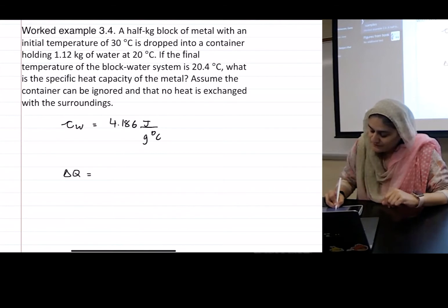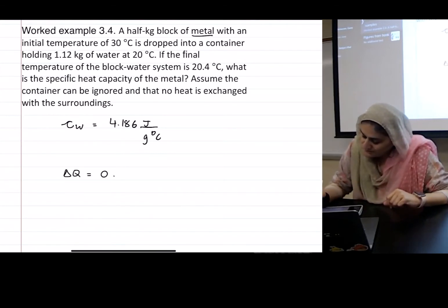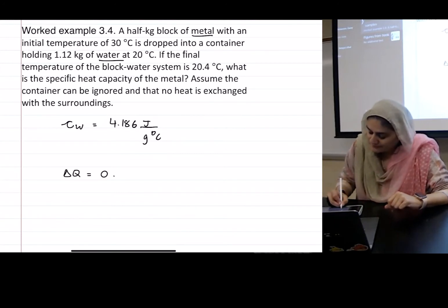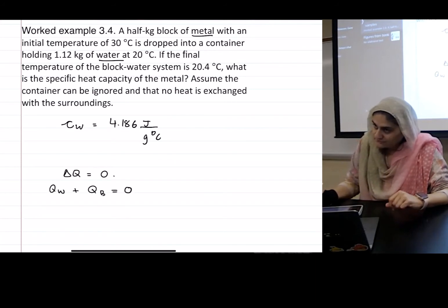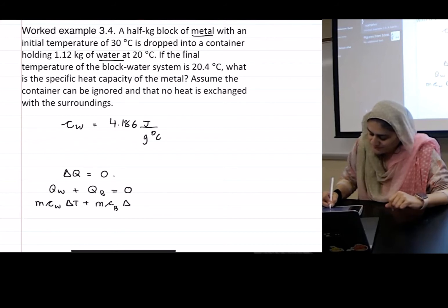Delta Q equals zero. What do we have? We have a metal and we have water. So what are the two delta Q's we're going to worry about? dQ_w plus dQ_b equals zero. Then it's going to be m_w c_w delta T plus m_b c_b delta T equals zero. Same exact steps.